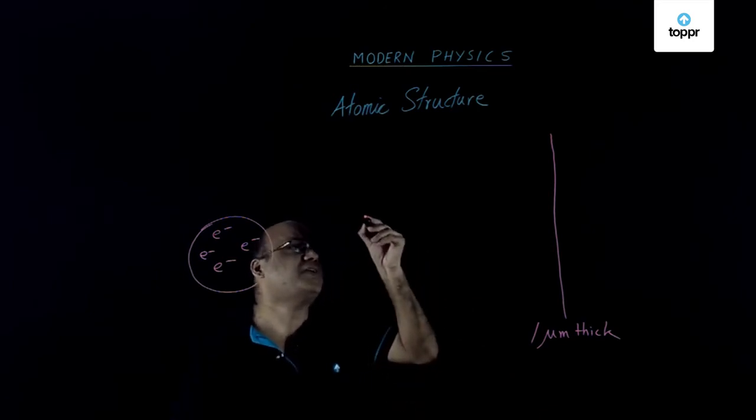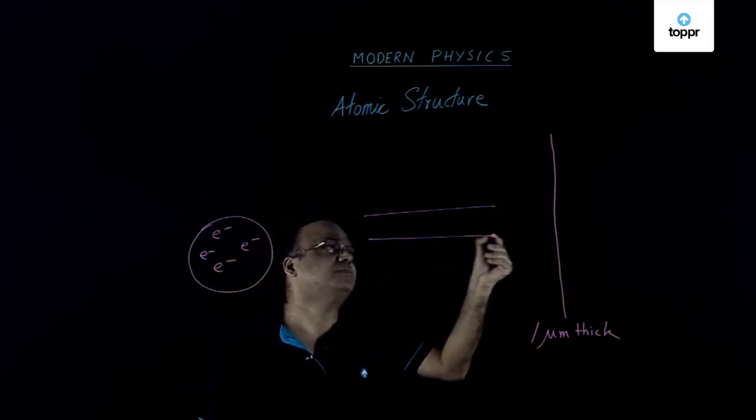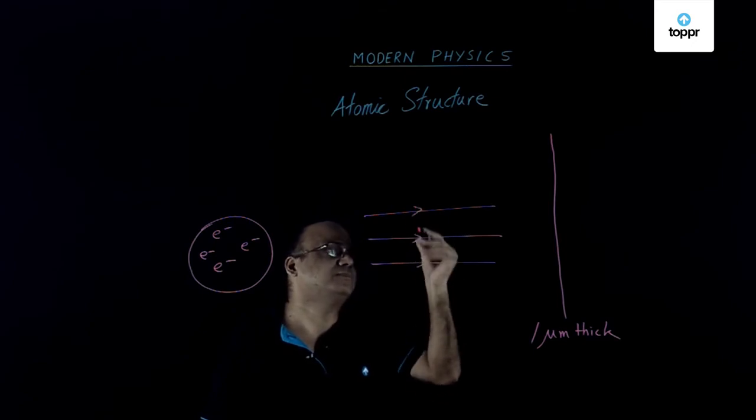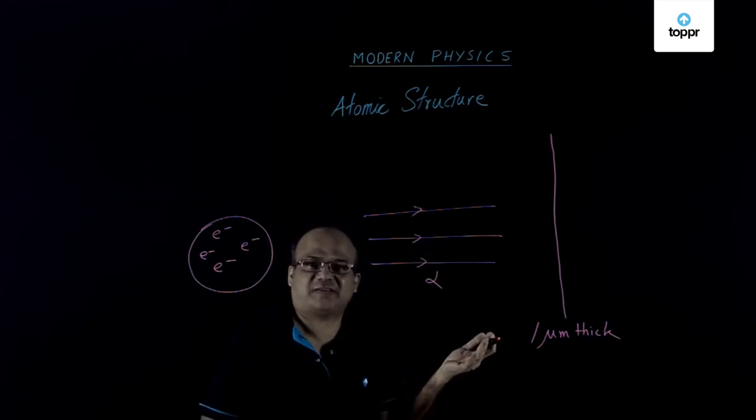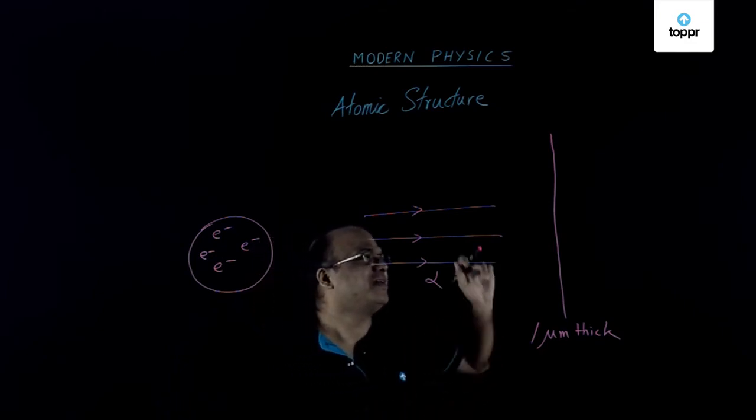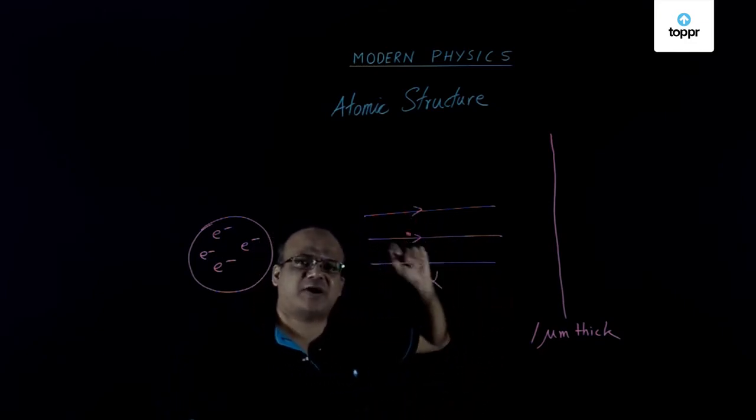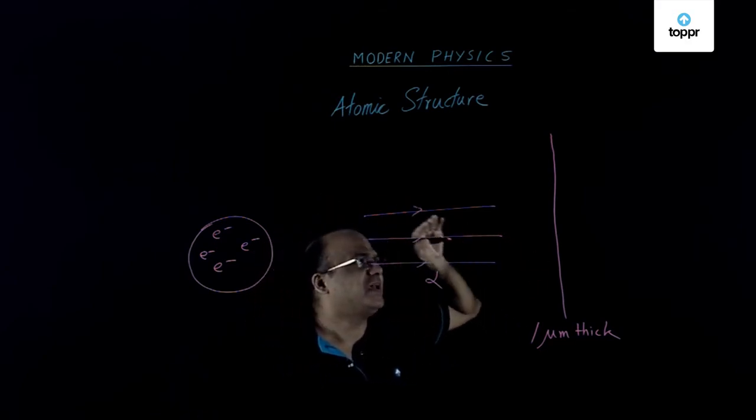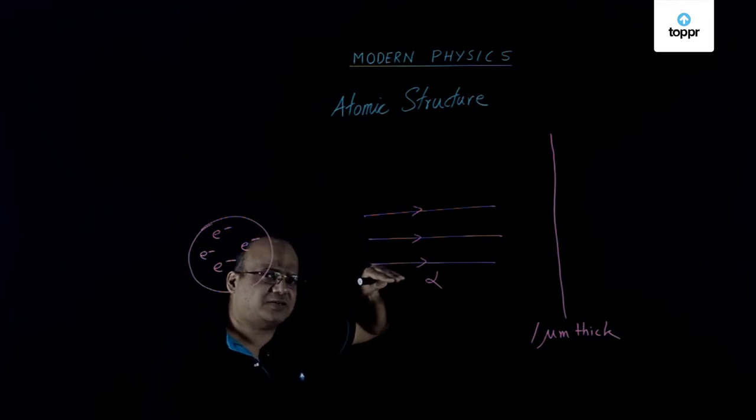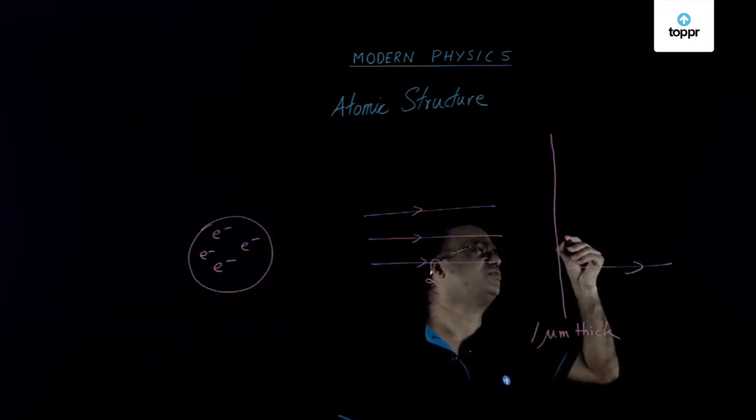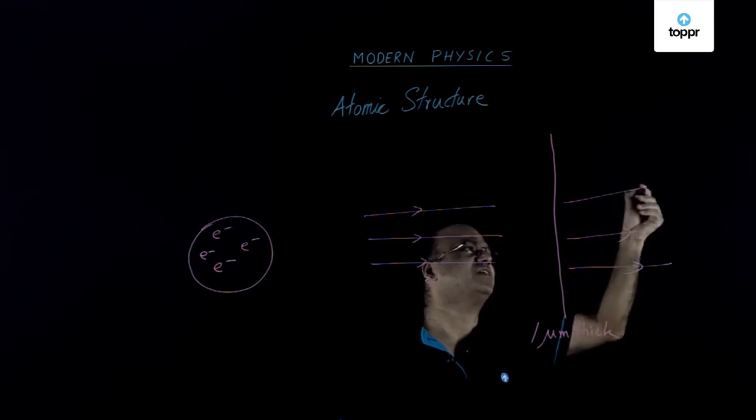And they bombarded this gold foil with alpha particles, which are quite heavy particles compared to electron at least. These alpha particles came from radon gas. Radioactivity was known in that point of time. They found that most of the alpha particles went straight through as if nothing is there.